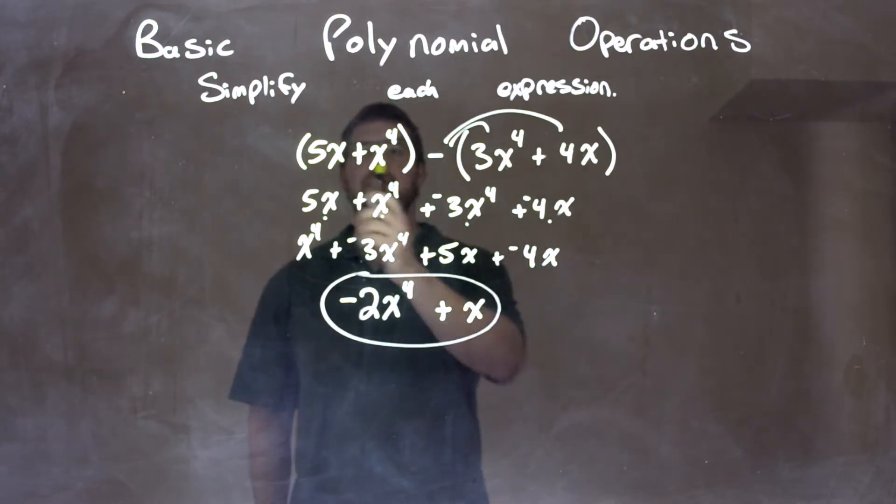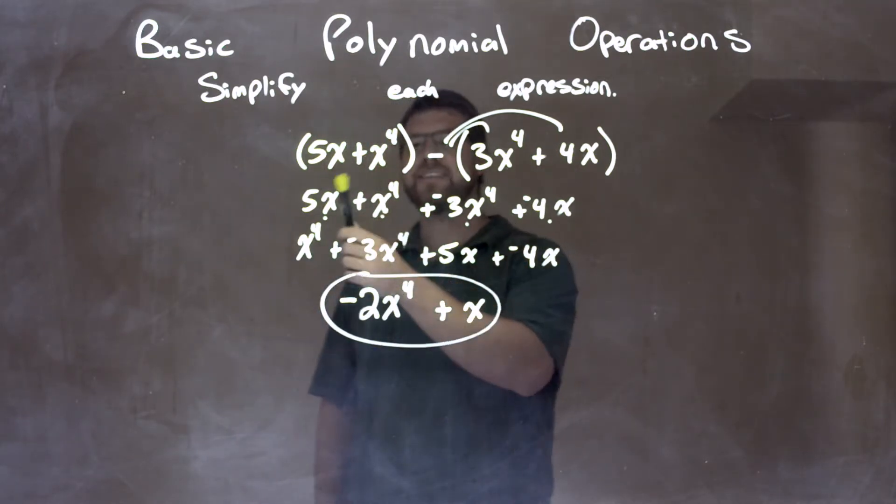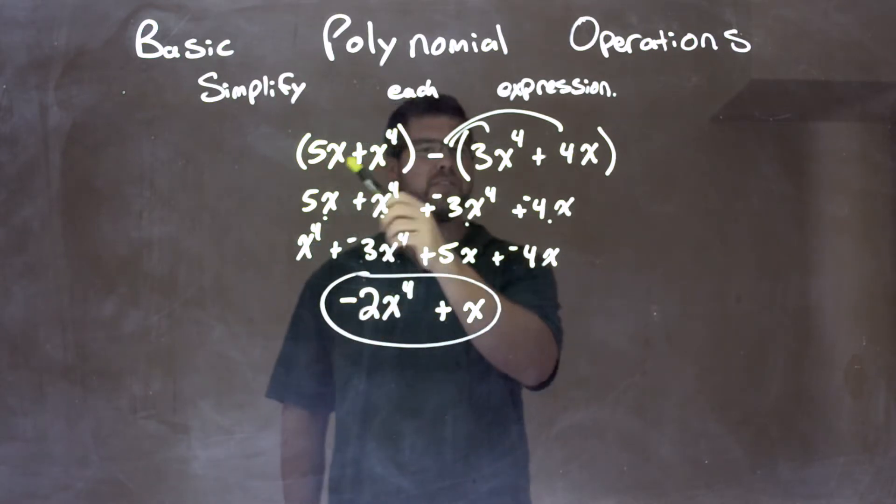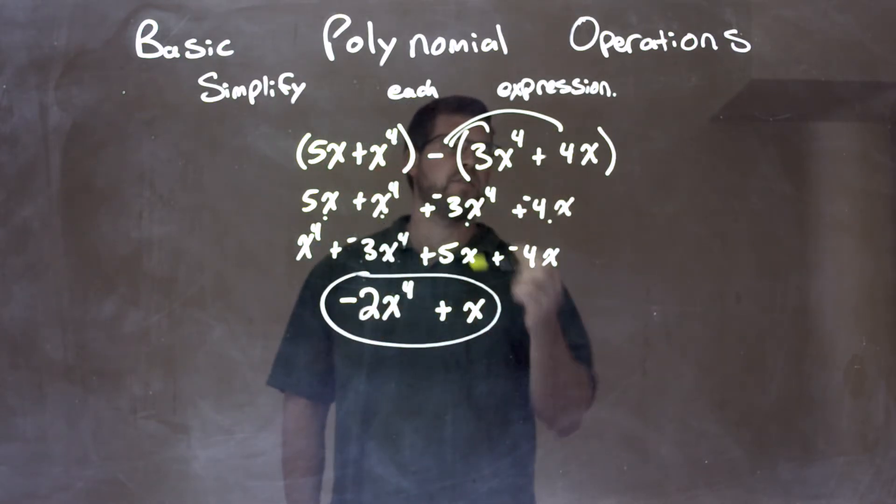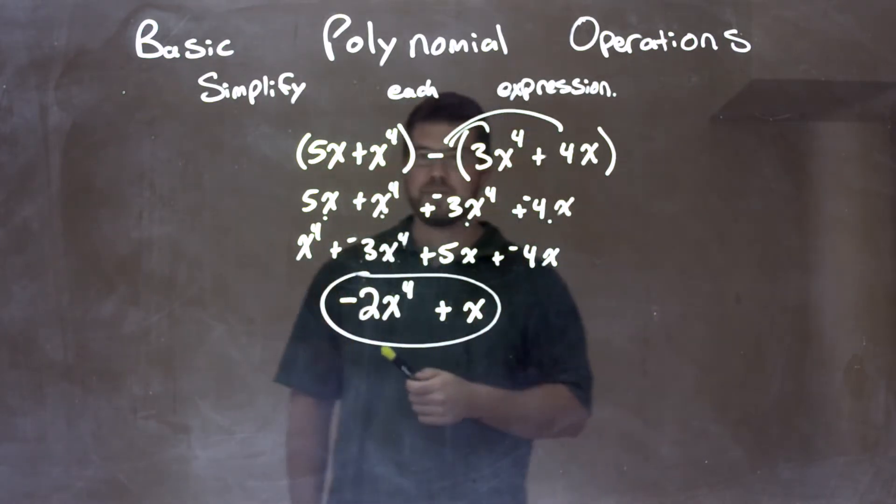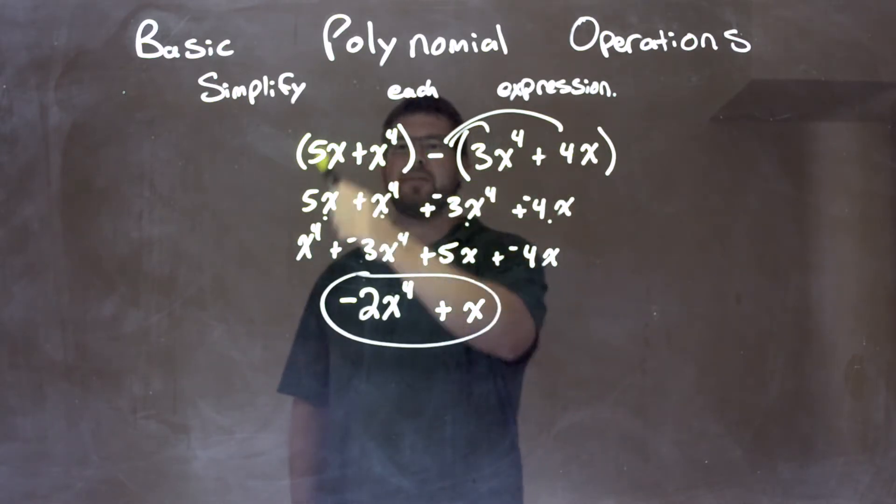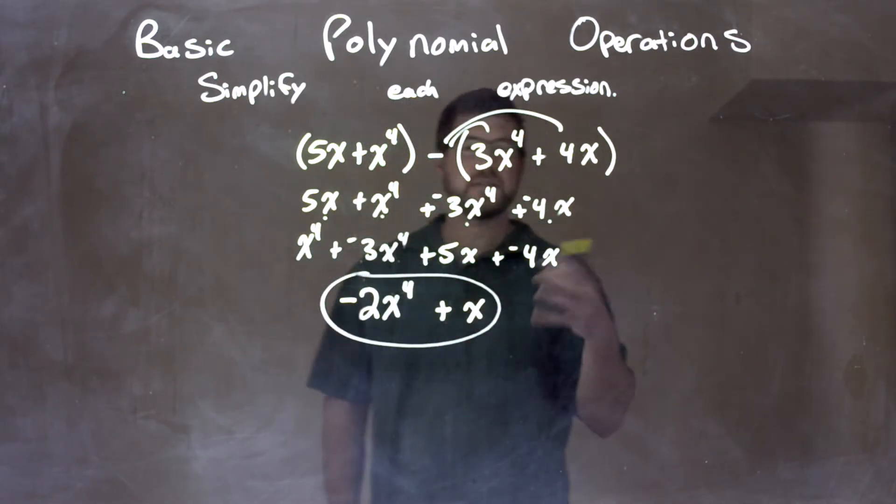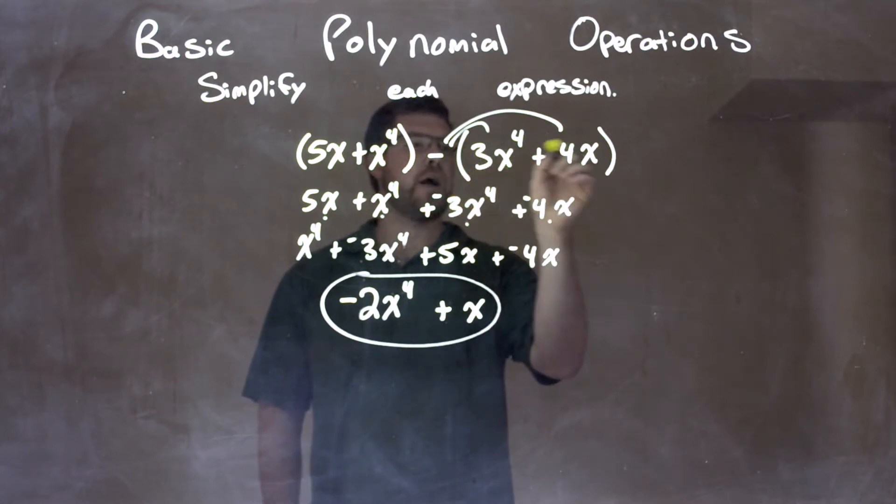So let's recap. We're given 5x plus x to the fourth power in parentheses minus 3x to the fourth plus 4x. So, I first looked at my parentheses. I don't have like terms within it, so we're good.